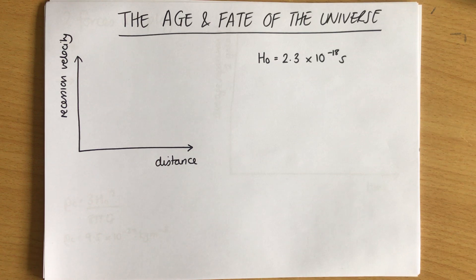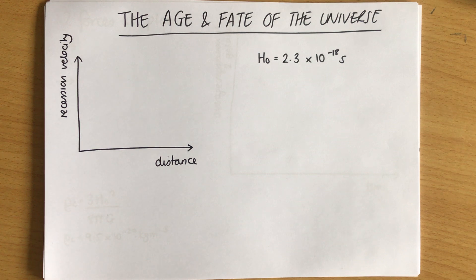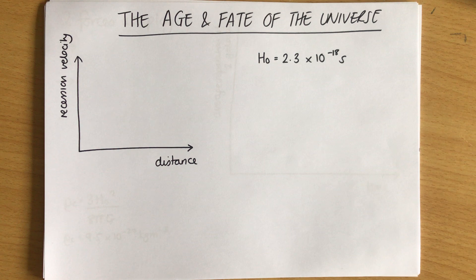In this video we're going to look at the age and the fate of the universe - two separate things: looking backwards to how long the universe has been around for, and looking forwards to what's going to happen to the universe in the future. To do that we need to think back to Hubble's law and Hubble's graph.